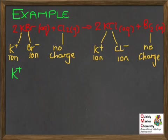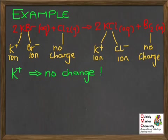Starting with the K⁺ ion: on the left we have K⁺ ion, on the right we have K⁺ ion — no change. So this is a spectator; it's not part of our redox reaction in reality.